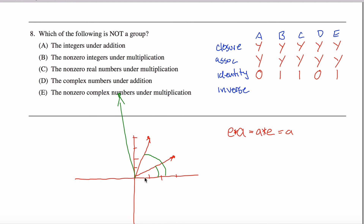Geometrically, the identity for the non-zero complex numbers under multiplication is the vector of magnitude one and angle zero — it doesn't change any vector under multiplication. So far, all five sets with their given operations qualify as groups. Our last axiom to consider is the inverse axiom: for any element A in the group, there must be some other element B such that combining them in either order gives back the identity element.